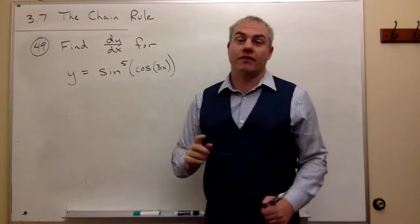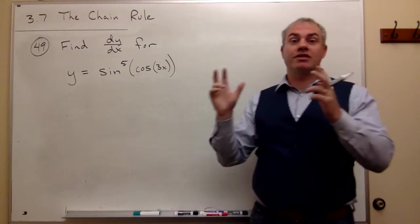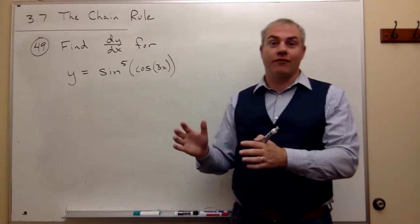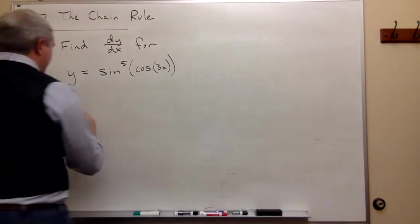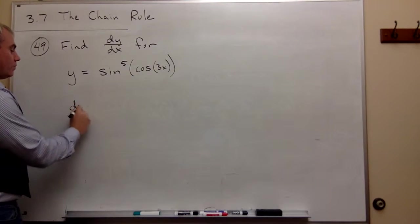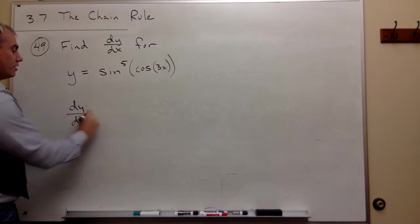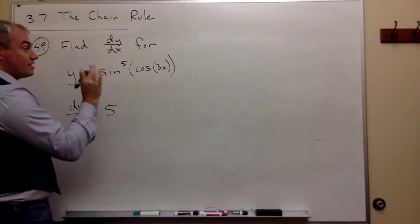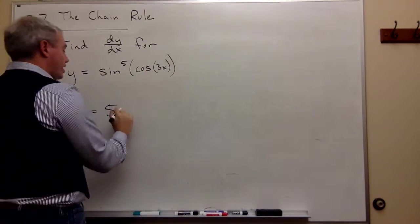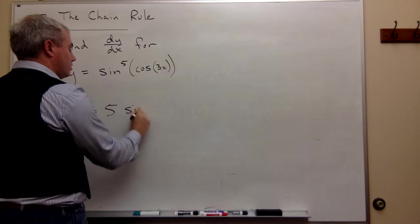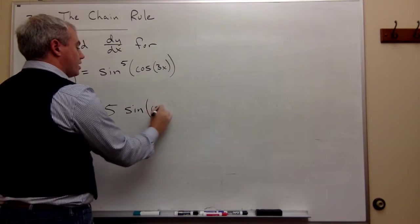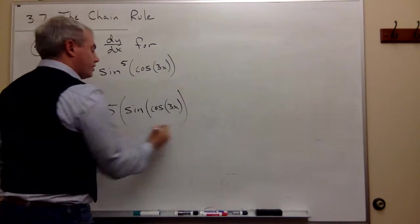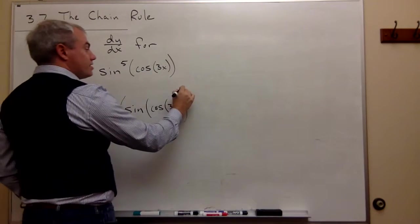That's raised to the fifth. So if I have something raised to the fifth, the derivative of something raised to the fifth is five somethings to the fourth. So that's what I need to write down first. So dy/dx is equal to five somethings — in this case, the something is sine of cosine of 3x — raised to the fourth.